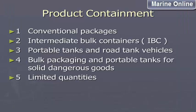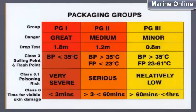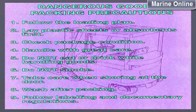Product Containment types: 1. Conventional Packages. 2. Intermediate Bulk Containers. 3. Portable Tanks and Road Tank Vehicles. 4. Bulk Packaging and Portable Tanks for Solid Dangerous Goods. 5. Limited Quantities.